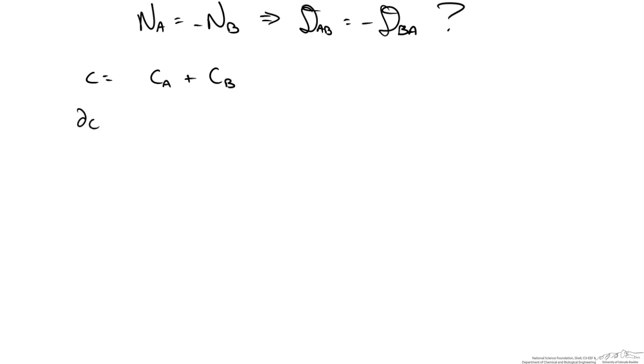If we were to differentiate this we know that there is no change in concentration. So we can write it as the following. This implies that the differential of the concentration of A is equal to the negative differential of the concentration of B.